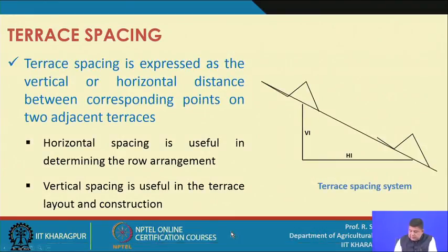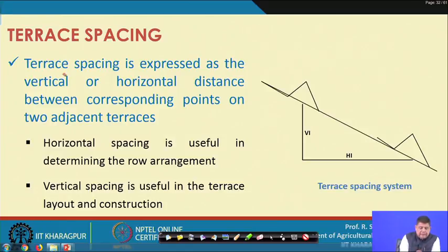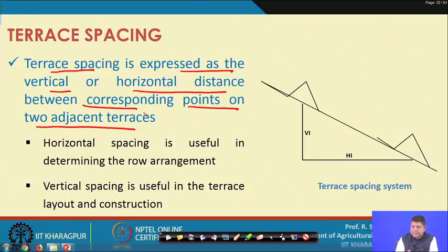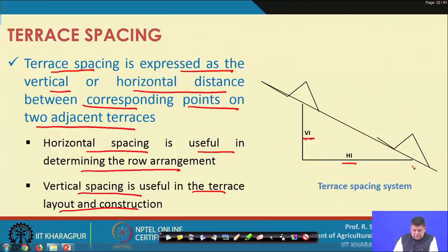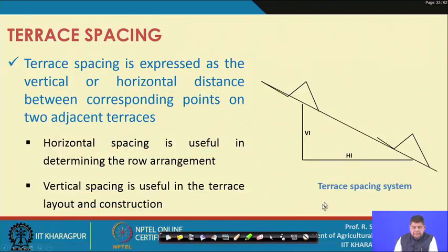Terrace spacing is expressed as the vertical or horizontal distance between corresponding points on two adjacent terraces. Horizontal spacing is useful in determining row arrangement, and vertical spacing is useful in terrace layout and construction. This concept is consistent with what we saw for bunds and bench terraces.